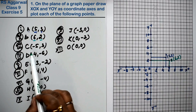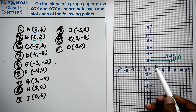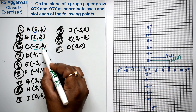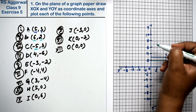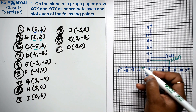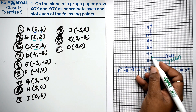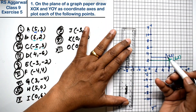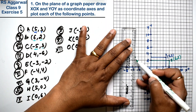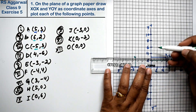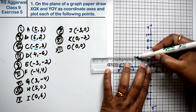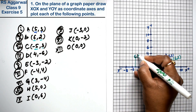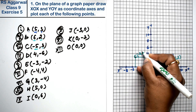Next, point C has x = minus 5. Minus x is on the left side. So x is minus 5 and y is 3 — y positive is on the upper side, and x minus is on the left side. So this is point C at (-5, 3).